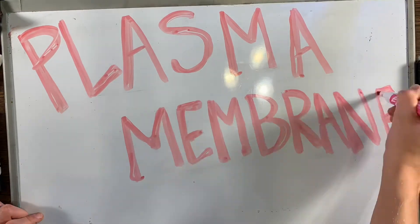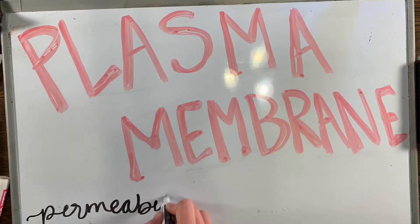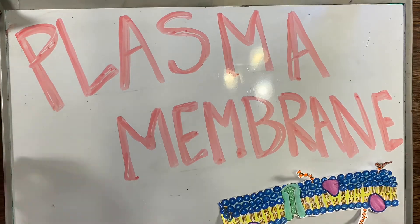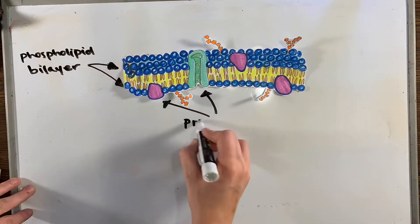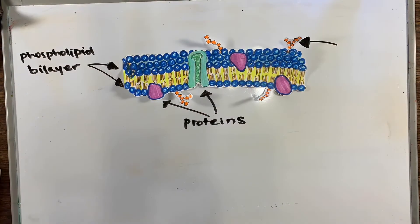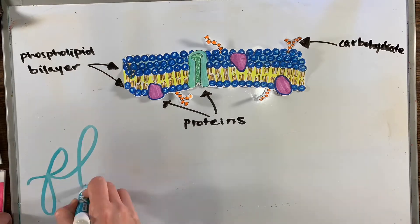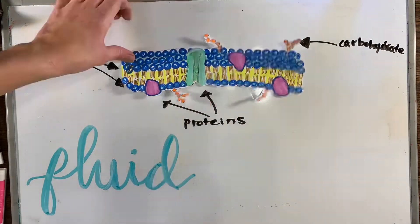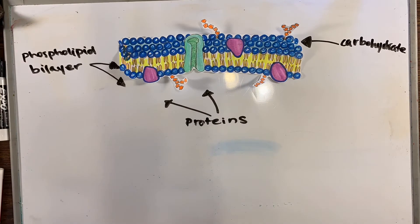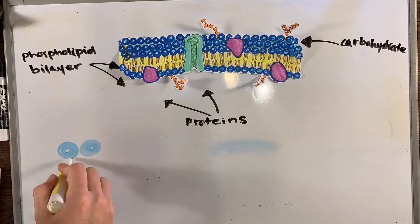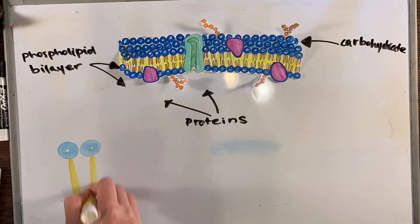The plasma membrane is a phospholipid bilayer with proteins, cholesterols, and carbohydrates scattered throughout. The structure of the membrane is fluid, so the positions of these components shift around. At low temperatures, kinks in the phospholipids prevent close packing to maintain fluidity, and cholesterol helps maintain reasonable fluidity at both high and low temperatures.